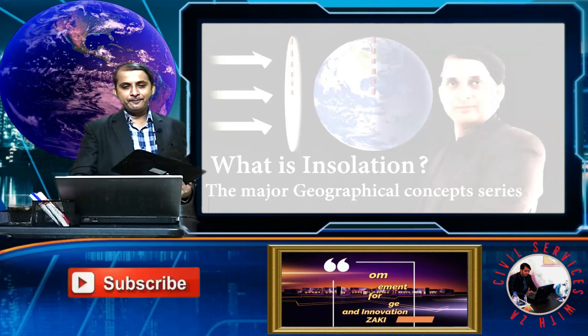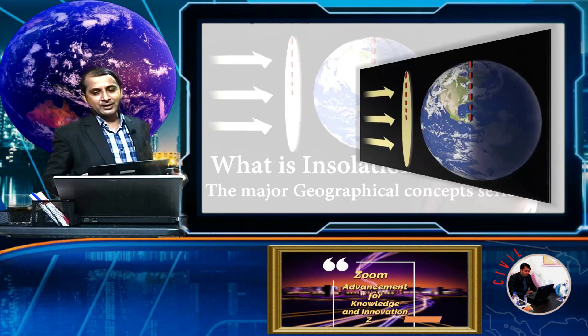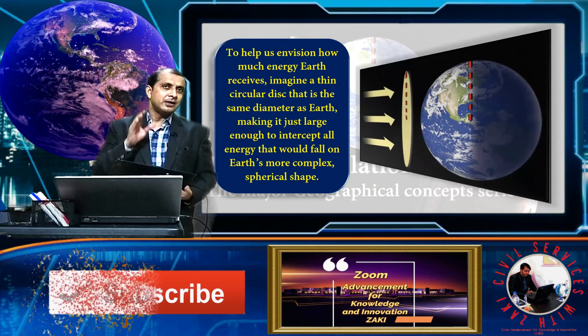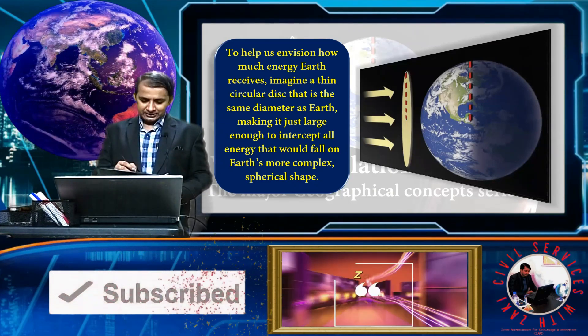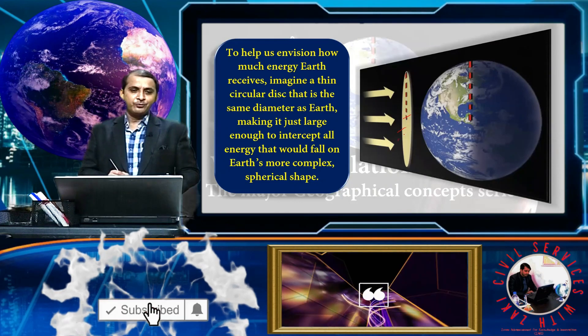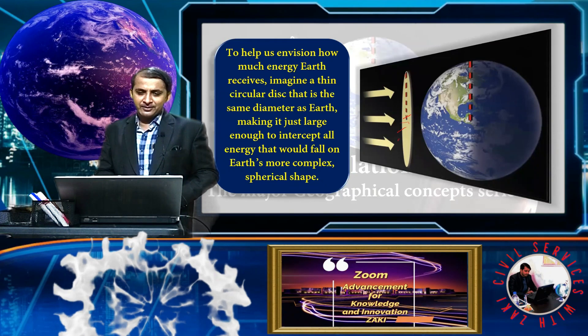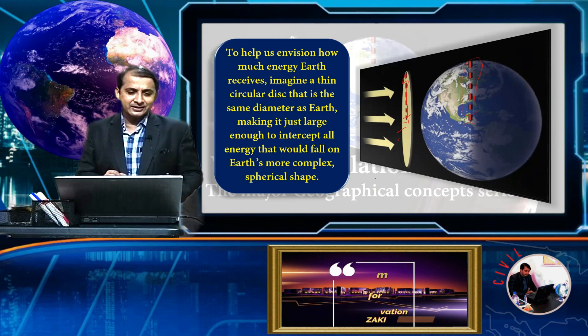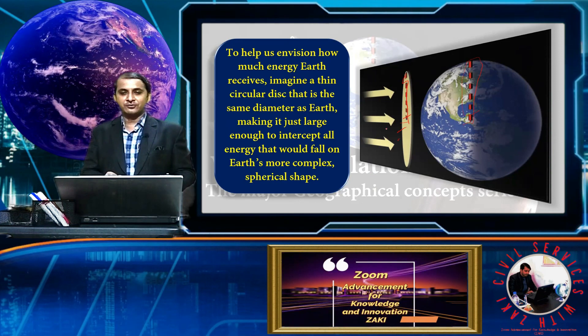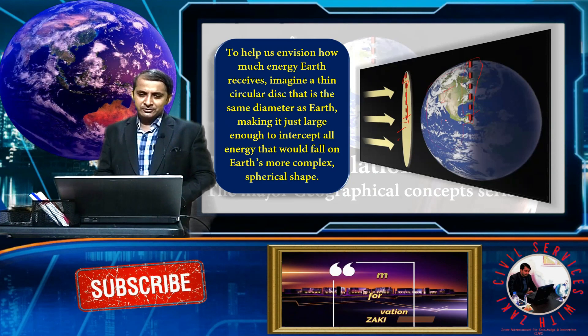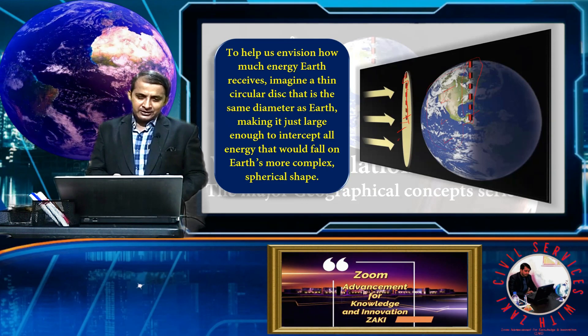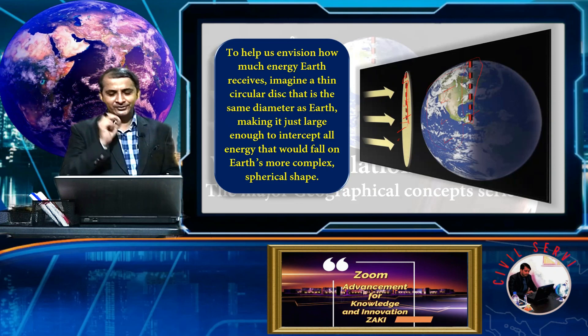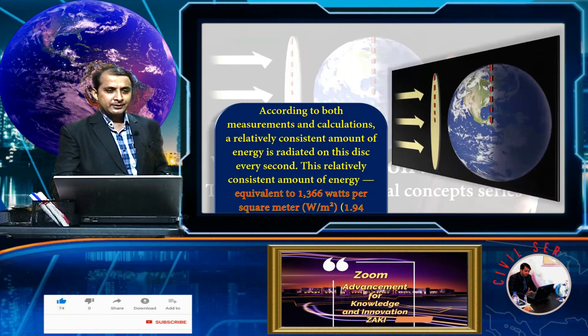To help us envision how much energy Earth receives, imagine a thin circular disc the same diameter as Earth, making it just large enough to intercept all energy that would fall on Earth. Earth is spherical so it's more complex. For the calculation of solar radiation or insolation, we use this disc model.